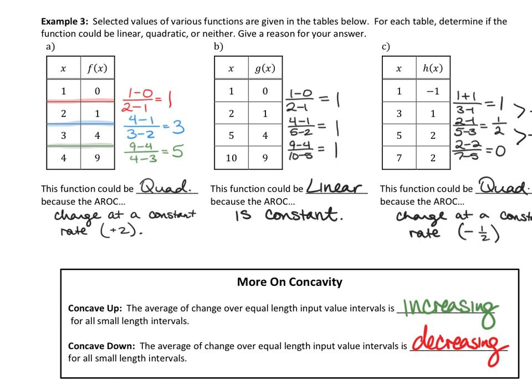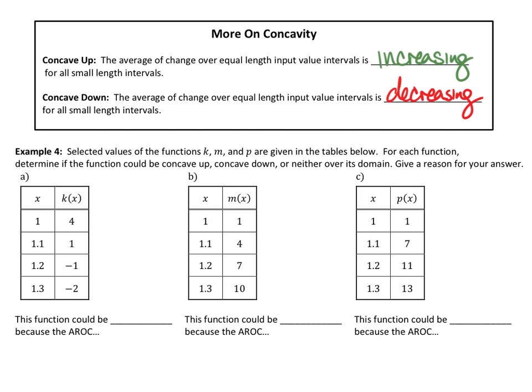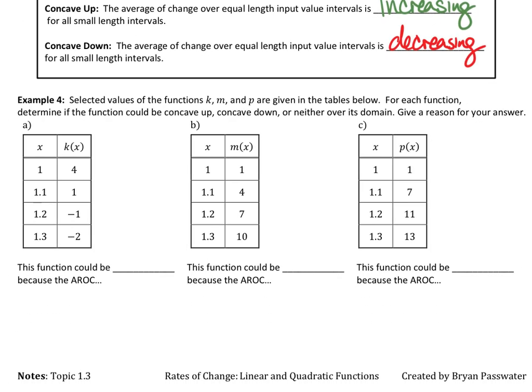Things are concave down when the average rate of change over equal-length input value intervals is decreasing. The middle table — table B — is neither concave up nor concave down because linear equations don't have concavity; they're straight lines. We can do the same thing we did on A, B, and C at the top with the tables down at the bottom, just with a different explanation.